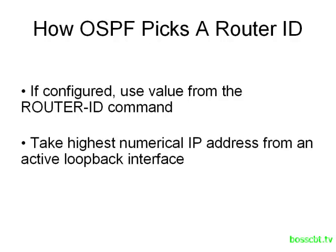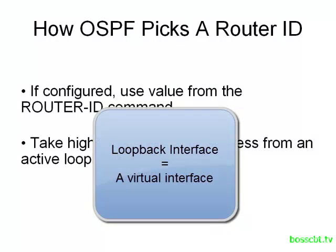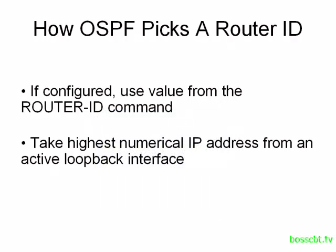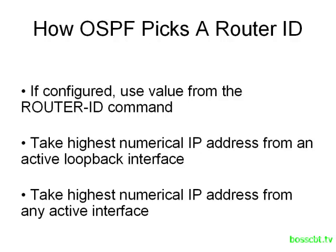However, if it's not configured, the router takes the highest numerical IP address from an active loopback interface. A loopback interface is a virtual interface — once you enable it, it's always in the up-up state and can never go down. It's convenient for an ID because there's no associated circuit that can be affected by a link flapping. So the router checks for loopback interfaces and takes the one with the highest IP address. If it doesn't have any loopback addresses, it looks at all physical interfaces and chooses the one with the highest IP address.